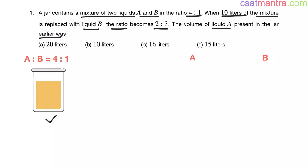We have a jar. In that jar, we have two liquids A and B. They are in the ratio of 4 is to 1. I am taking liquid A as 4X and liquid B as X, because they are in the ratio of 4 is to 1.